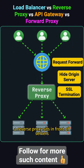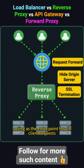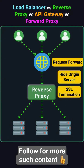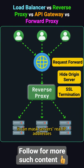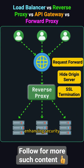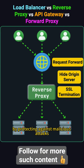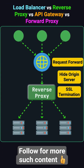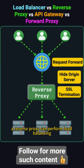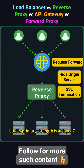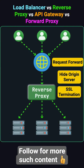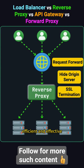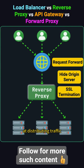A reverse proxy sits in front of servers, acting as the entry point for all client requests and forwarding them to a back-end server cluster. It can mask servers' real IP addresses, enhancing security by protecting against malicious attacks. It can also cache content and handle SSL termination. A reverse proxy can perform load balancing, but its primary strength is at layer 7. In high-traffic situations, dedicated load balancers are typically more efficient and effective at distributing traffic.